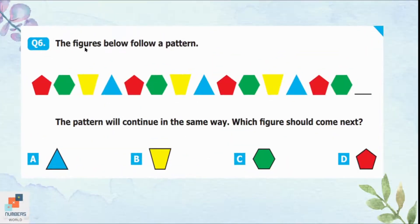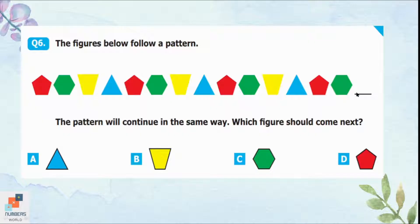Question 6: The figures below follow a pattern that continues in the same way. Which figure should come next? We can see there is a pentagon first, then a hexagon, then a trapezoid, and then a triangle. So if the same pattern is repeated, after the hexagon a trapezoid will come. Option B is the correct one.